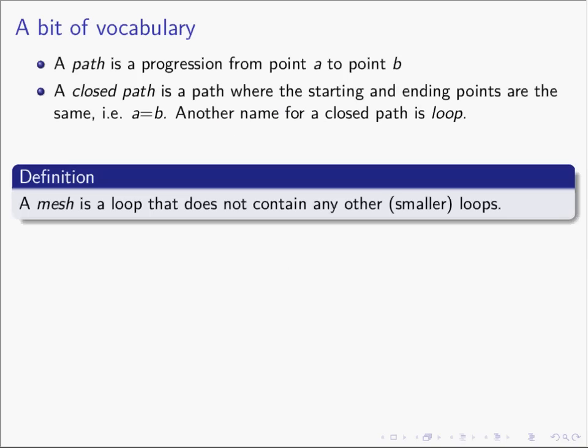Before we get started we need to introduce a little bit of vocabulary. If you remember back to when we started, we defined what a path was. A path is a progression from point A to point B. A closed path is where the path begins and ends at the exact same location — like when you go hiking and you park your car at the trailhead and walk back to where you started from. Another name for a closed path is a loop.